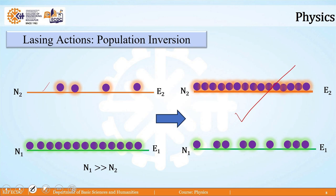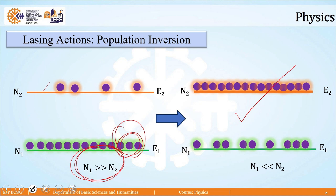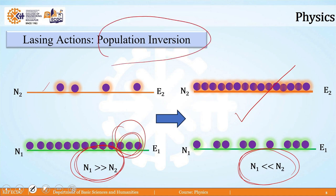To get more and more stimulated emission of radiation, it is very important that the number of atoms in the excited state is larger — more than in the ground energy level. We reverse or invert the initial population, making N2 much greater than N1. This particular state is called population inversion, and it is the most required condition for the formation of laser light.